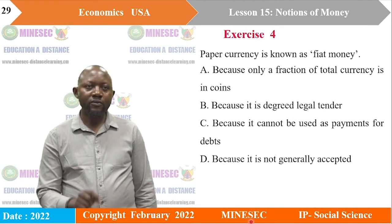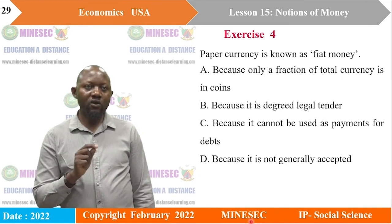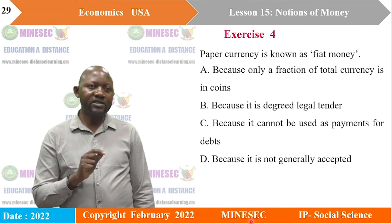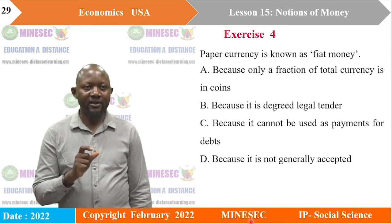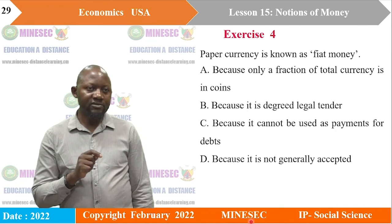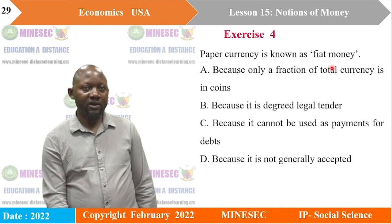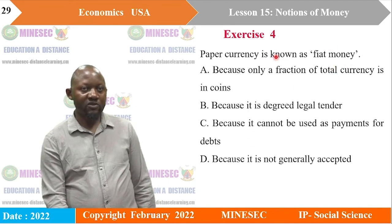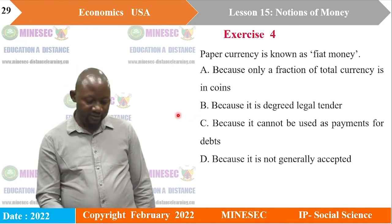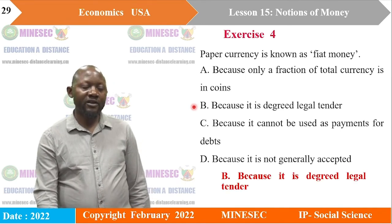Paper currency is known as fiat money: A) because only a fraction of total currency is in coins, B) because it is decreed legal tender, C) because it cannot be used as payment for debts, or D) because it is not generally accepted. Fiat money is otherwise legal tender, and legal tender is any instrument of exchange that you are compelled by law to accept for the exchange of goods and services and the settlement of debts. So the correct answer is B: because it is decreed legal tender.